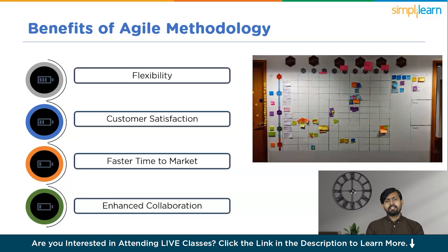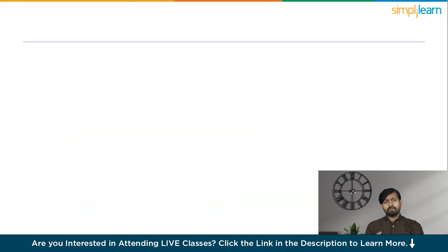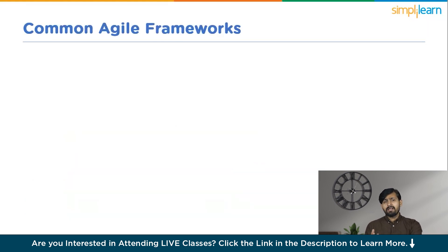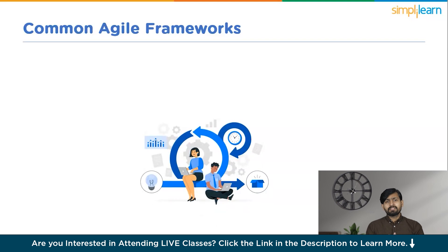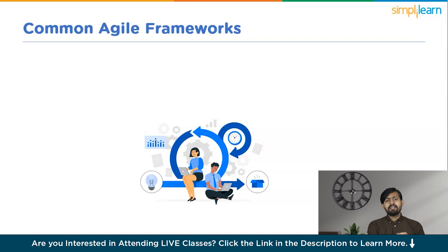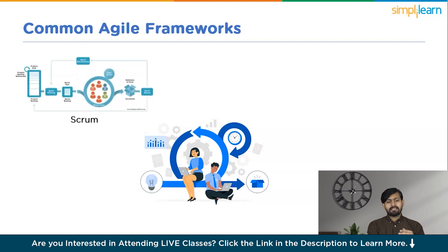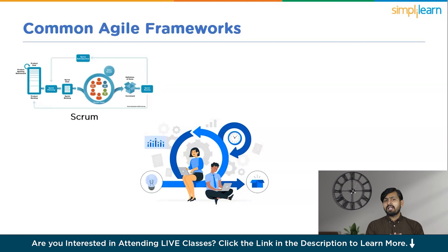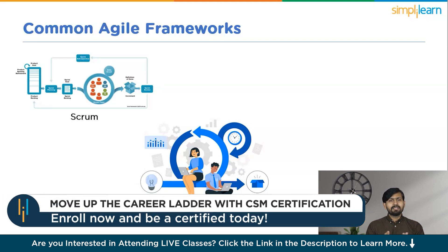Let's discuss some of the common Agile frameworks used in the software development industry. There are several common Agile frameworks and methodologies, each offering its own approach to implementing Agile principles effectively. One widely used framework is Scrum, a popular Agile framework characterized by its iterative approach to development and emphasis on self-organizing cross-functional teams. Scrum teams work in short iterations called sprints, delivering incremental releases of working software.